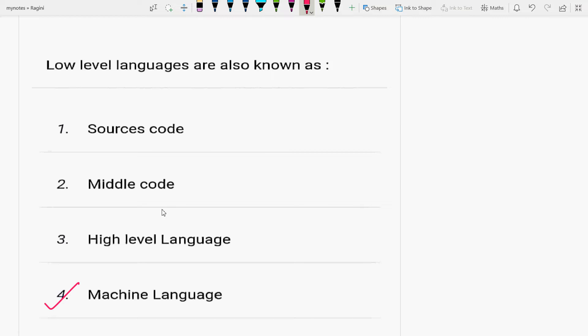Low level programming languages were developed first and high level languages came along later. High level languages are more easily understood by humans, mostly coding languages like Java. So the right answer will be machine language.